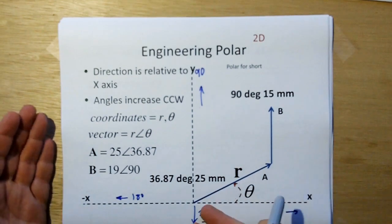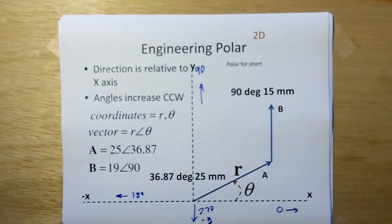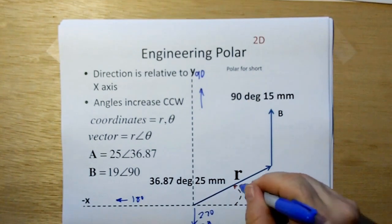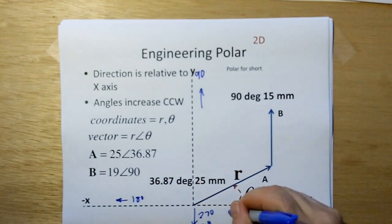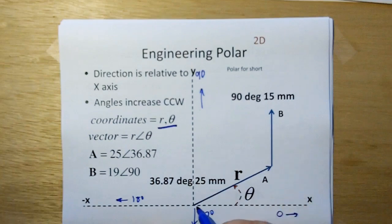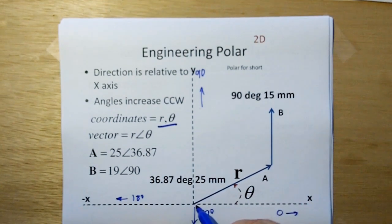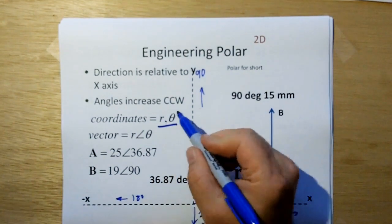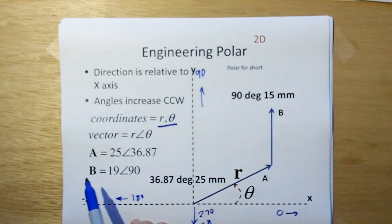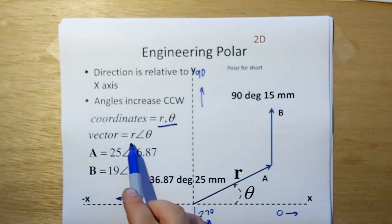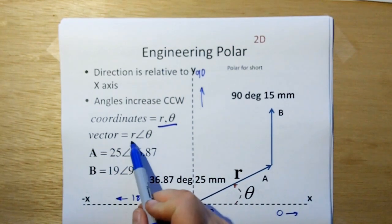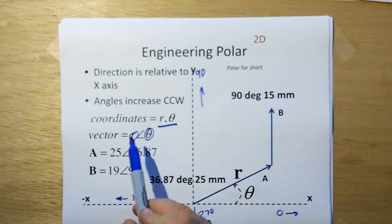We can represent the same vectors, and the other thing is that these angles increase counterclockwise. For engineering polar, we have two coordinates: R, which is the magnitude of the vector, and theta, which is the direction. We typically represent a vector as R angle theta when we use engineering polar. This is the shorthand for a magnitude at a direction.